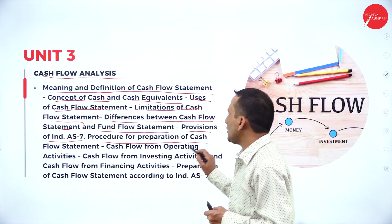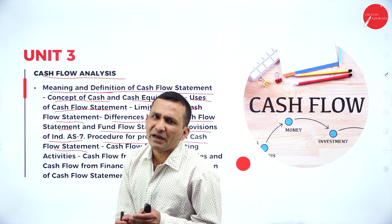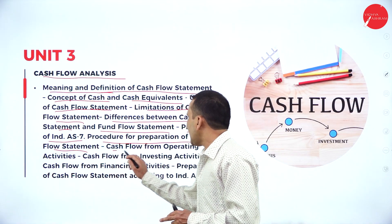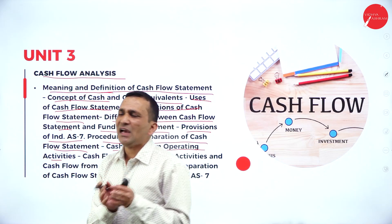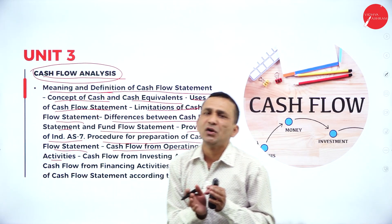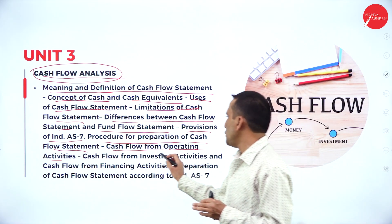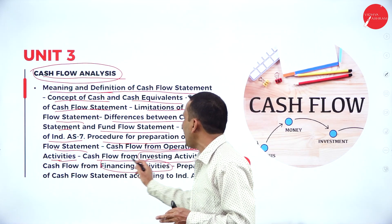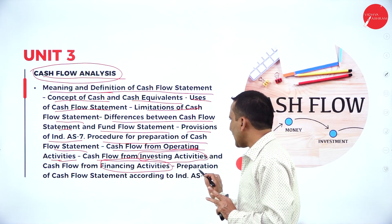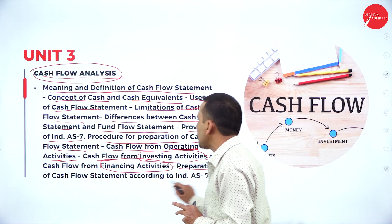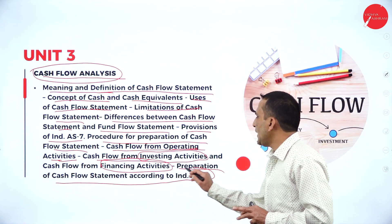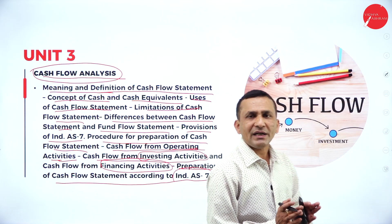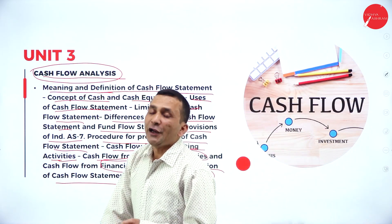The procedure for preparation of the cash flow statement will be covered, including the prescribed format. The cash flow statement includes three activities: cash flow from operating activities, cash flow from investing activities, and cash flow from financing activities. Problems will focus on preparation of cash flow statement according to Indian Accounting Standard 7, because we must follow the accounting standard as specified.